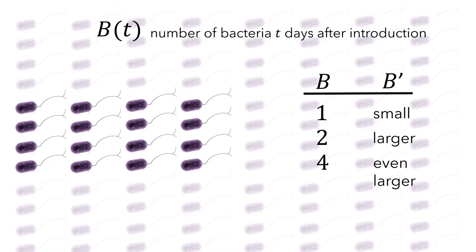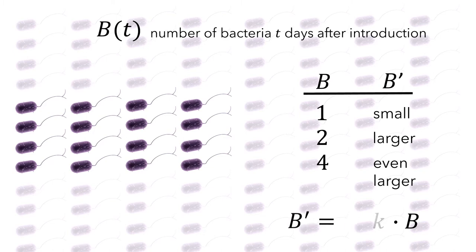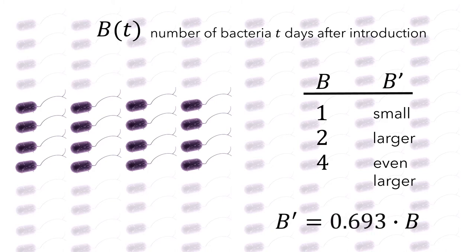The way in which we write this is b' is equal to some number k times b. Your first instinct might be that k is equal to 2, because the numbers are doubling. Or you might think that k is equal to 1, because the number of bacteria we add each hour is equal to the number that are already present. This is all very reasonable, but it turns out that the number is actually the natural log of 2, which is equal to 0.693.